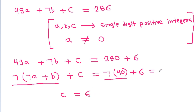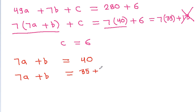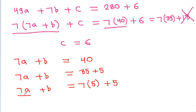And also it equals 7 times 39 plus 13, but c cannot be equal to 13. So 7a plus b equals 40, which is 35 plus 5, and 35 is 7 times 5. Therefore b must be equal to 5 and a must be equal to 5.